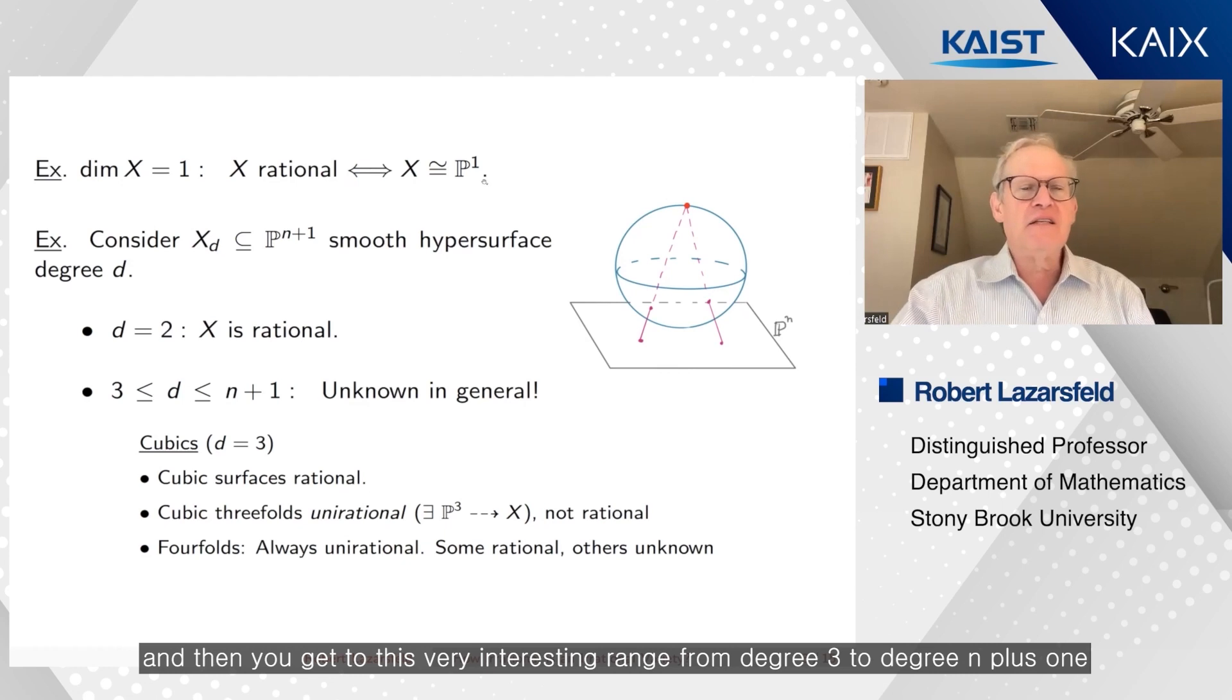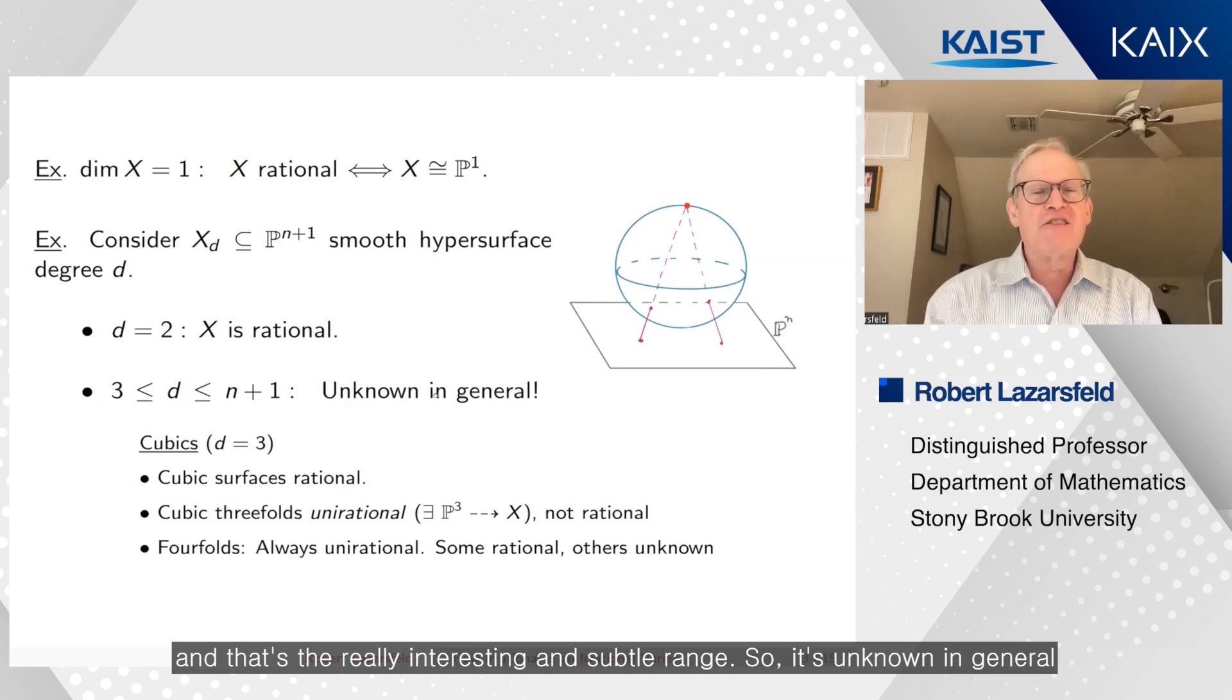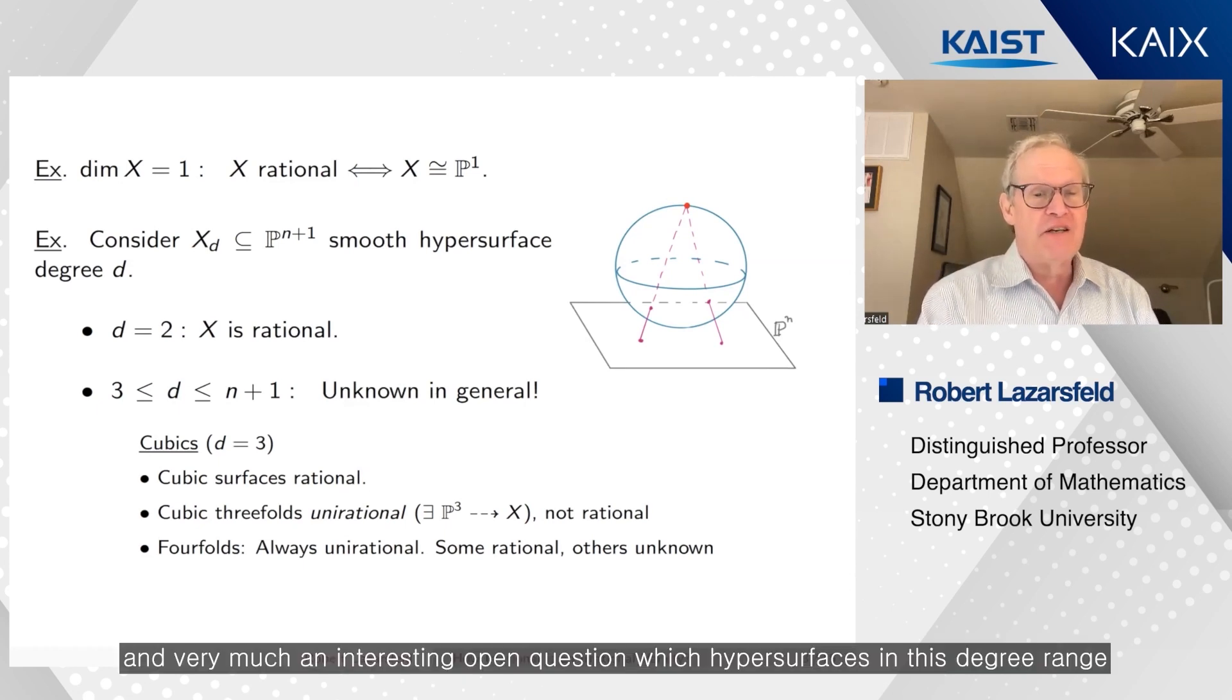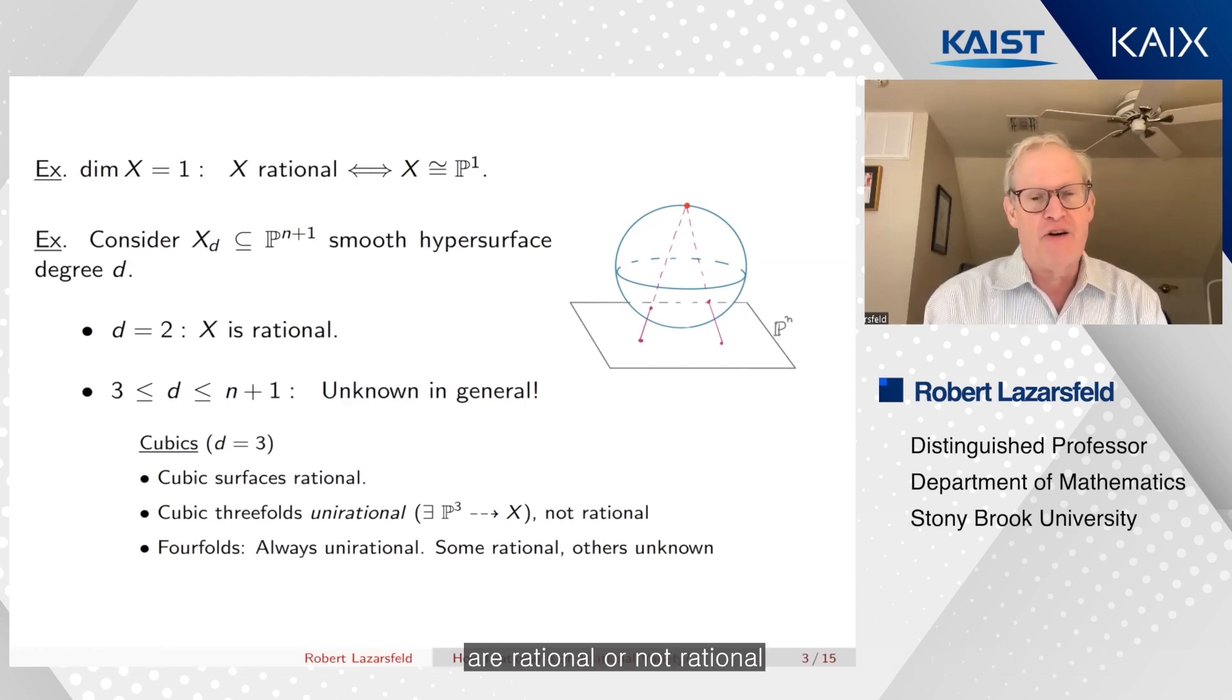And then you get to this very interesting range from degree three to degree n+1. And that's the really interesting and subtle range. So it's unknown in general and very much an interesting open question, which hypersurfaces in this degree range are rational or not rational.